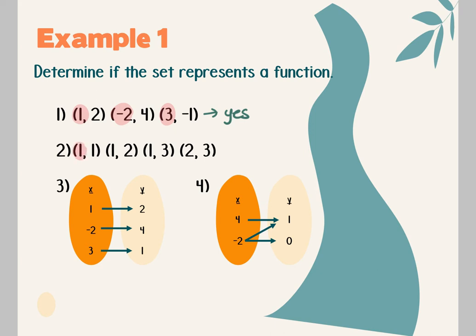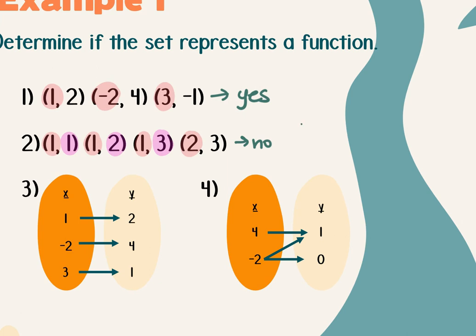For number 2, the x's are 1, 1, 1, and 2. Does an x repeat? Yes. Now I look at what it repeats with. If it was a completely duplicate point like 1,1 and another 1,1, it'd be fine. The problem is the x remains the same but the y changes — if that happens, this is a no. If I had 1,1, my coordinate point would be here; if I had 1,2, my coordinate point would be here. You cannot have them along a vertical line. So even if just two of those happened, it would be a no.